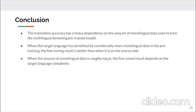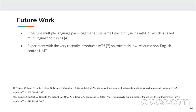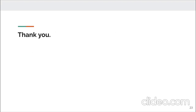When the amount of monolingual data is roughly equal, the fine-tuned results depend on the target language complexity. As future work, we plan to fine-tune multiple language pairs together jointly using MBART, which is called multilingual fine-tuning. We also plan to experiment with the recently introduced MT5 on extremely low-resource non-English-centric neural machine translation. Thank you.